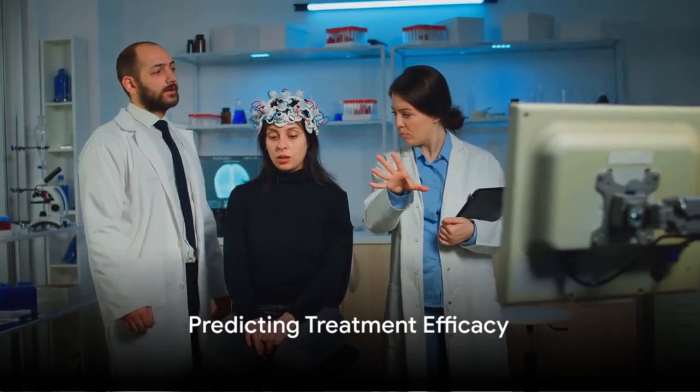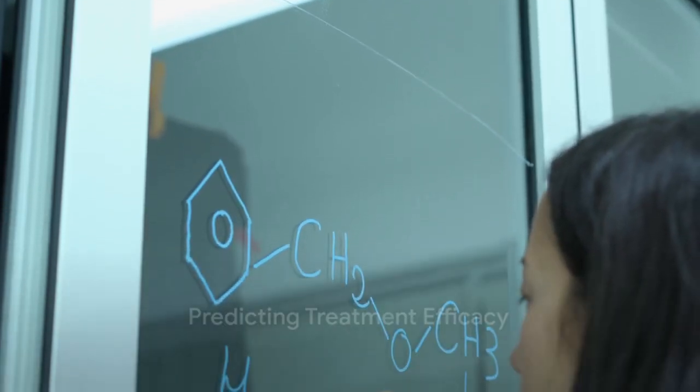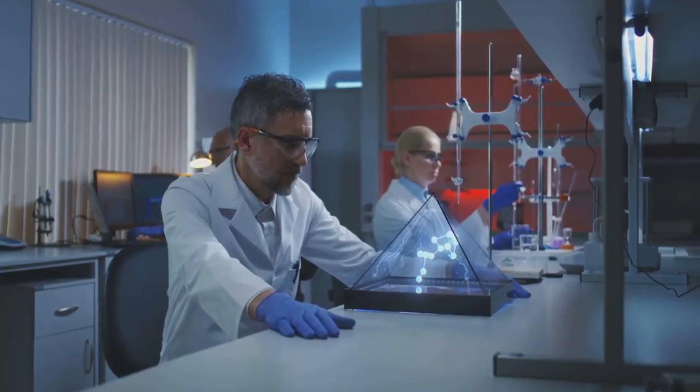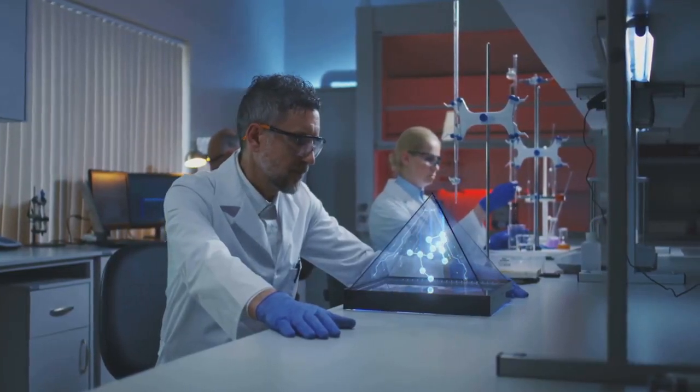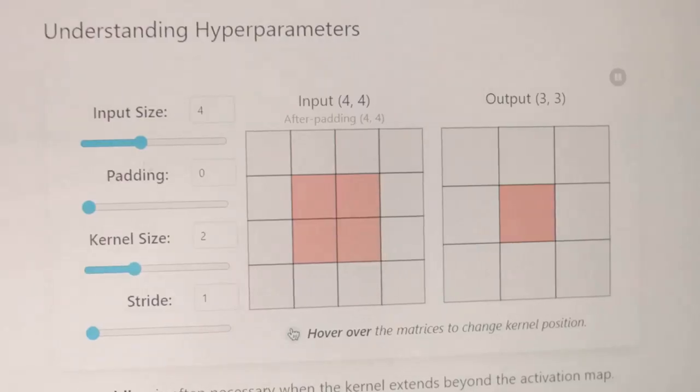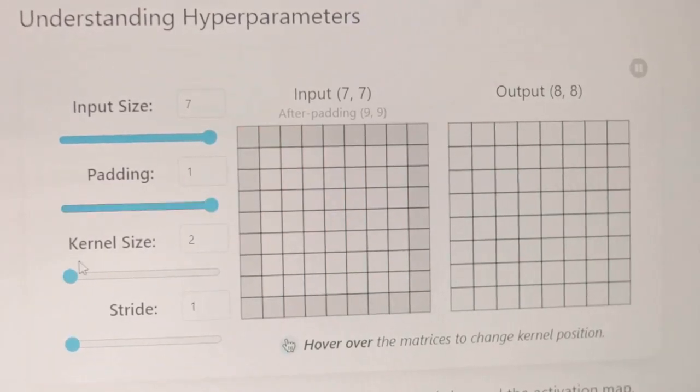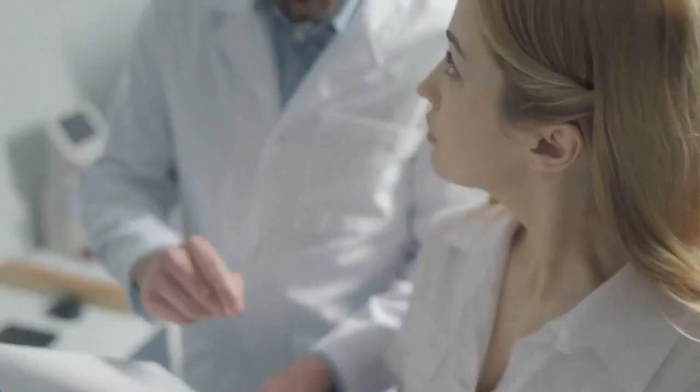But how about predicting treatment efficacy? Well, the McGinty equation has that covered too. It can simulate the interactions between aminocyanine molecules and various types of cancer cells. This predictive modeling could help estimate the efficacy of the treatment on different cancer types and patient populations, leading us towards a future of personalized medicine.